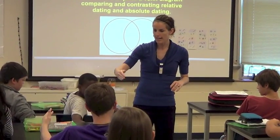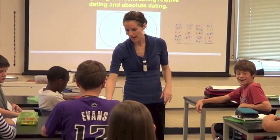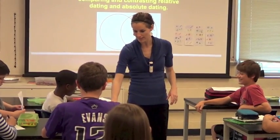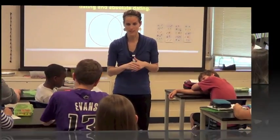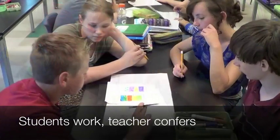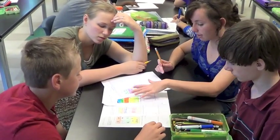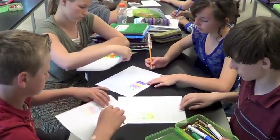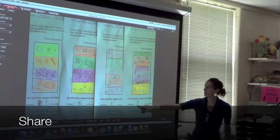You four are going to be working together. I want you to lay all four of your columns together. Look at the bottom — it says: after the activity, respond to the following: 'We found blank to be an index fossil.' Do you have an index fossil? If yes, what are the reasons why? And if no, what are the reasons why? We've got four different rock columns that represent four different areas geographically — can you find it in each layer?